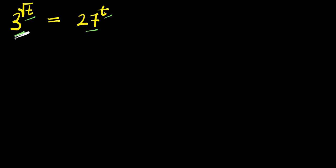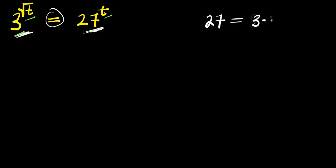Now, the base here is 3, and the base here is 27. Observe that what we have here is an equality sign. What we are going to do will be to ensure that the two bases are the same. Remember, 27 is 3 times 3 times 3, which is 3 to the power of 3. So we are going to replace this 27 with 3 to the power of 3.